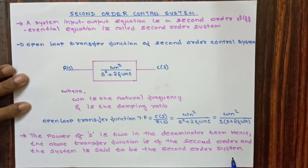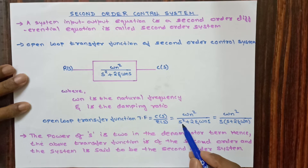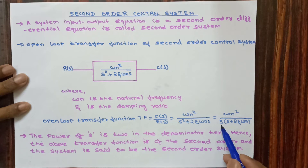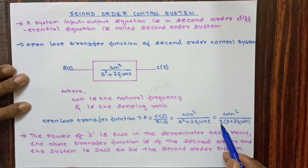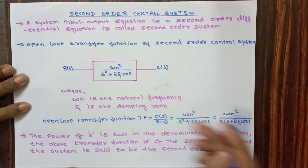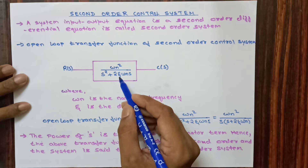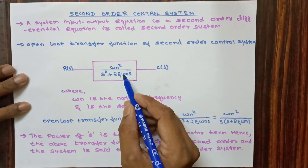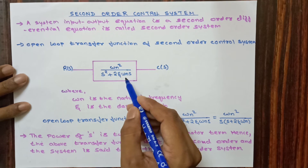The type of the system is determined by taking s common in the denominator. We can see s to the power n, where n equals 1. The pole at the origin is 1, therefore the type of the system is 1. For analyzing, we need a smart and intelligent control system.